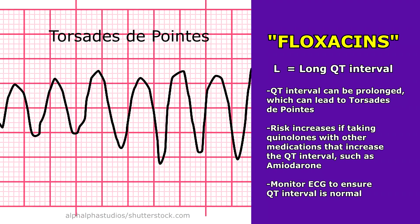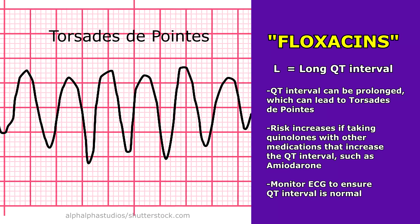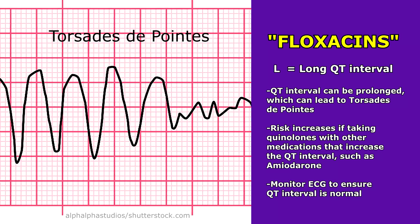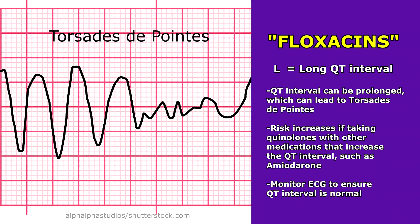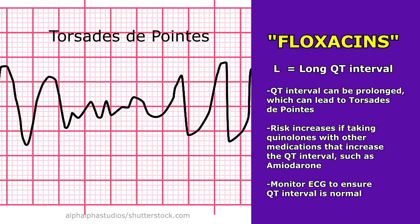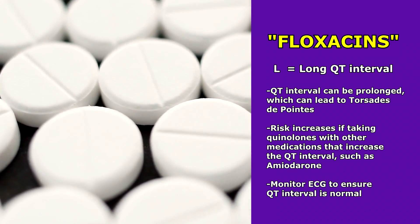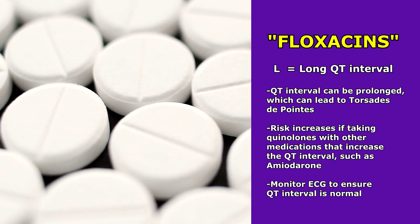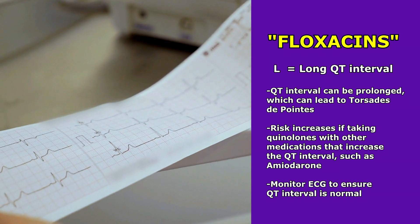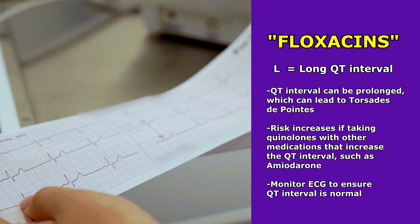L is for long QT interval. Quinolones can prolong the QT interval, which can lead to a lethal rhythm called torsades de pointes. The risk is increased if the patient is taking a quinolone along with another medication that prolongs the QT interval, like the antiarrhythmic amiodarone. As the nurse, look at the ECG, measure the QT interval, and make sure it falls within normal limits.